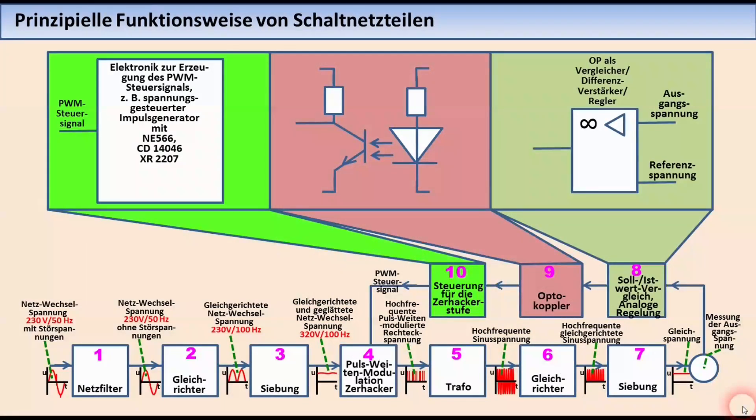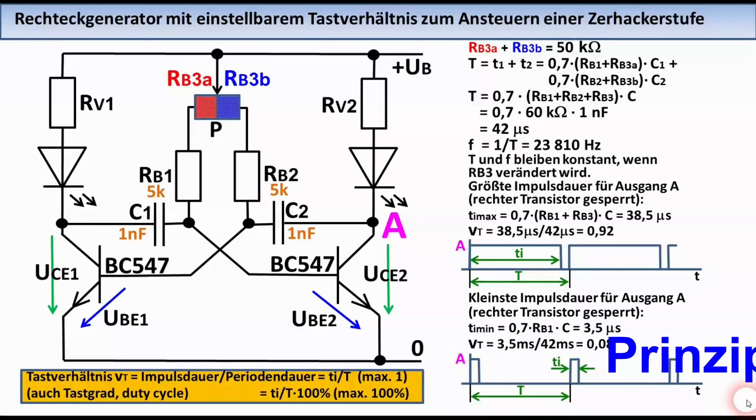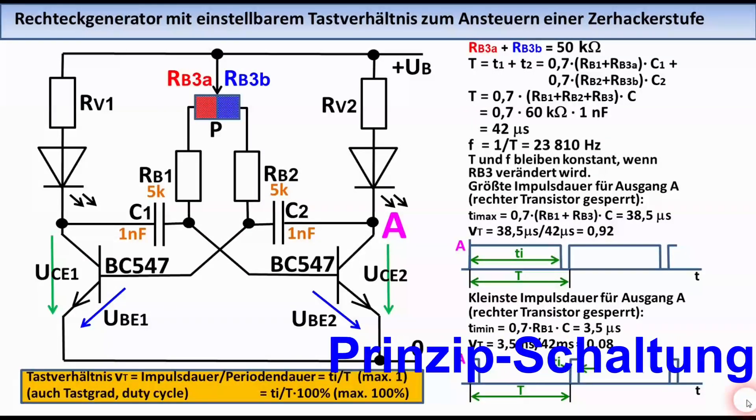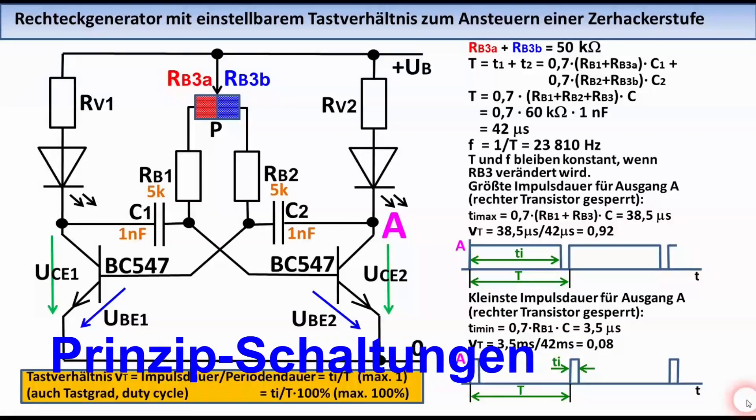In Abhängigkeit vom Istwert-Sollwert-Vergleich erzeugt dieser Baustein ein Signal, das dann über den Baustein 9, nämlich den Optokoppler zur Potentialtrennung, dem Baustein 10 zugeführt wird. Der Baustein 10 erzeugt dann wiederum ein Signal zur PWM-Steuerung des Bausteins 4.